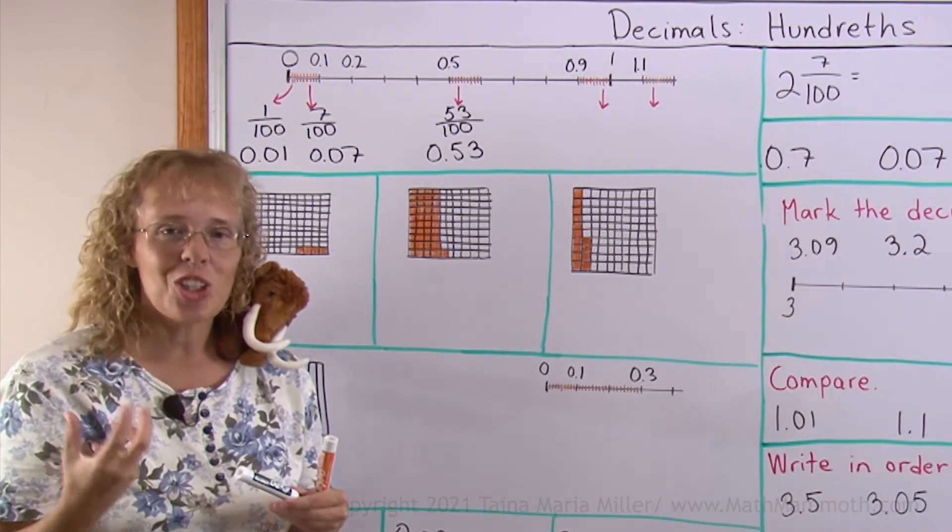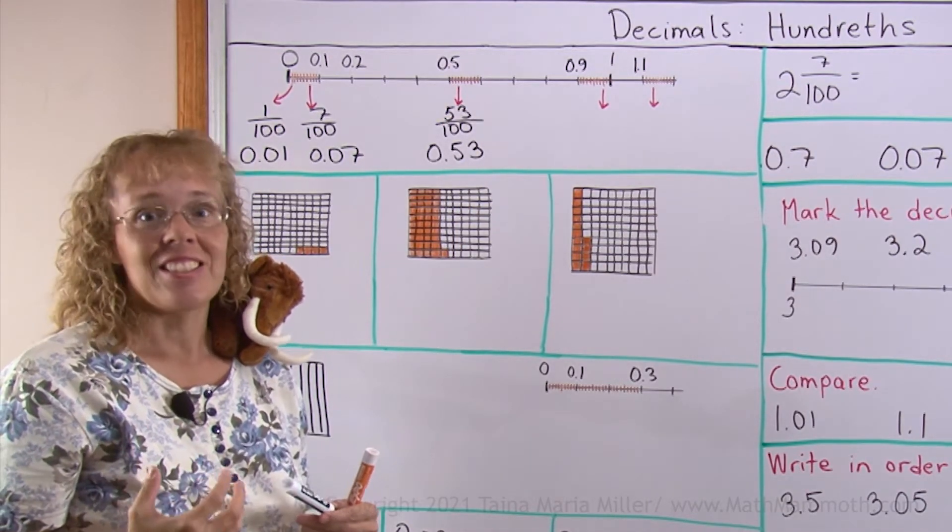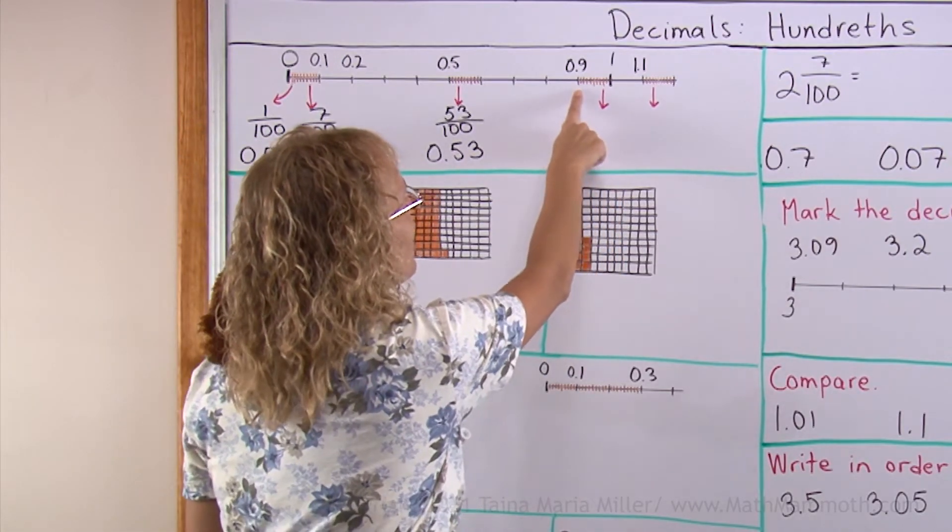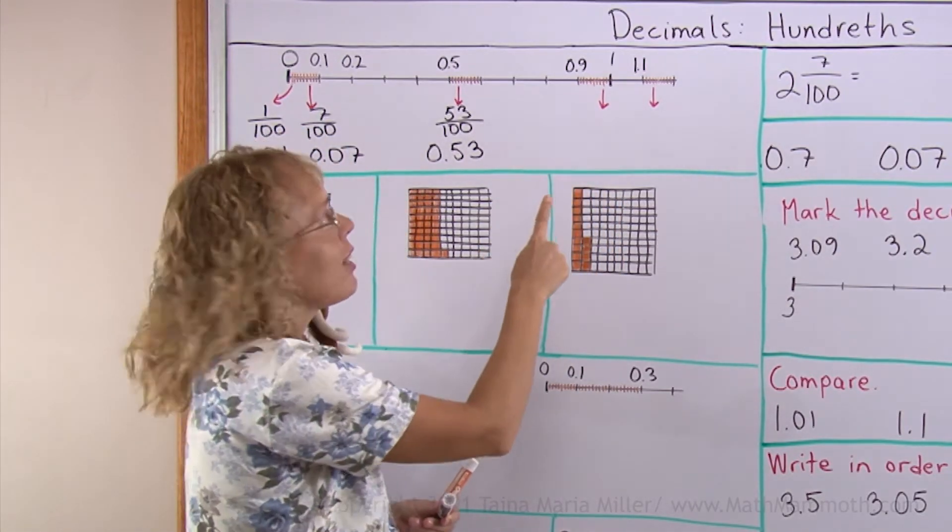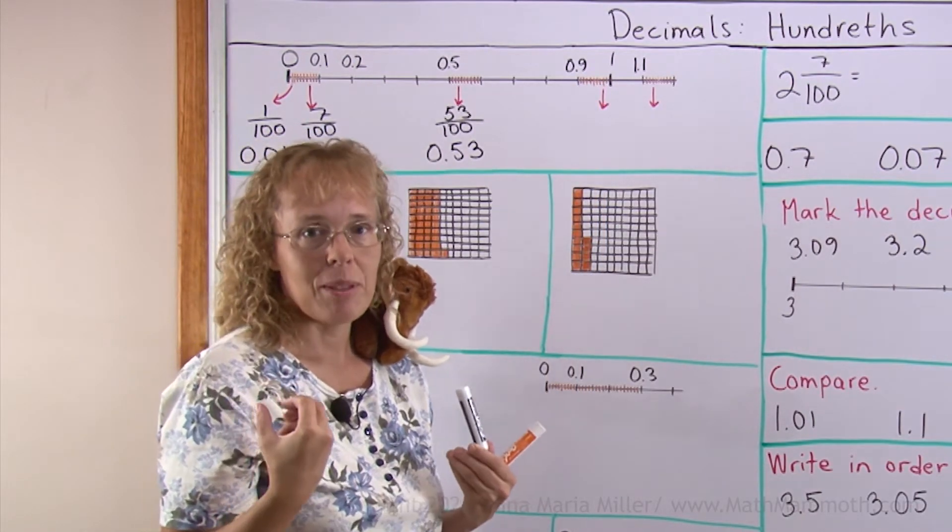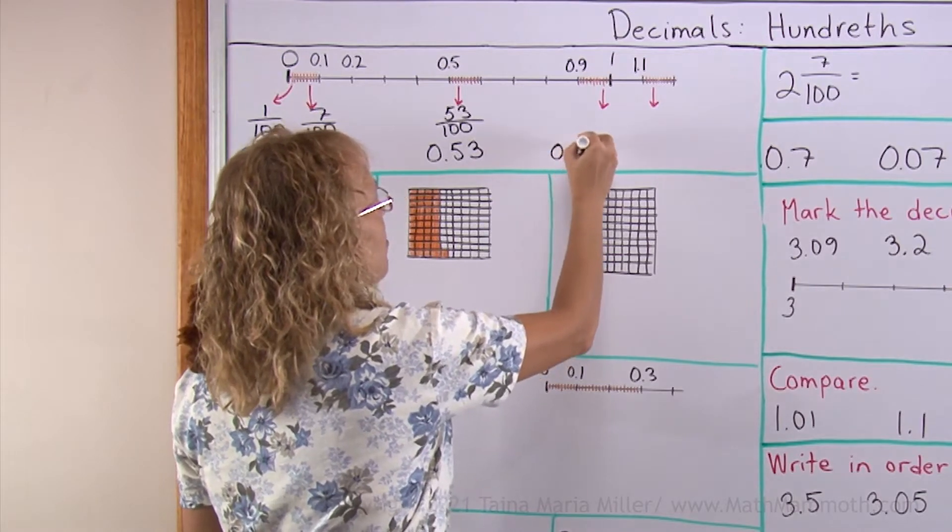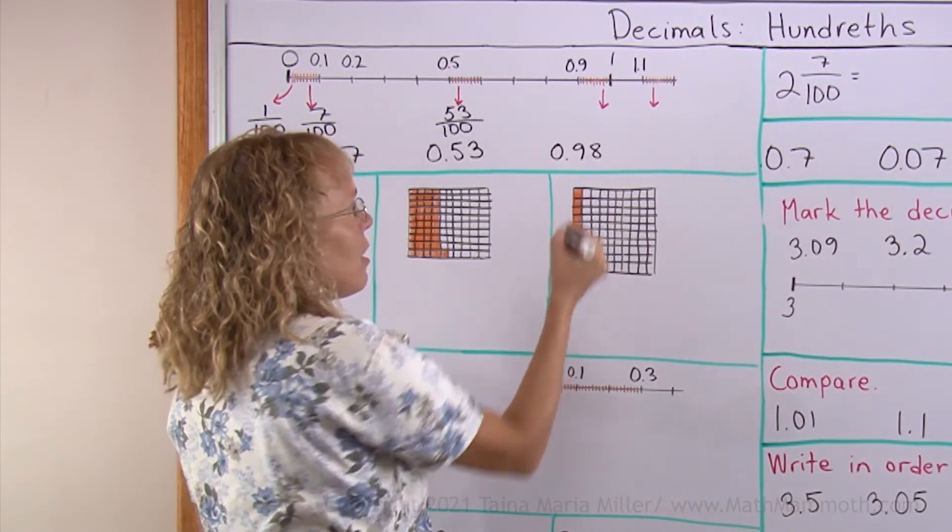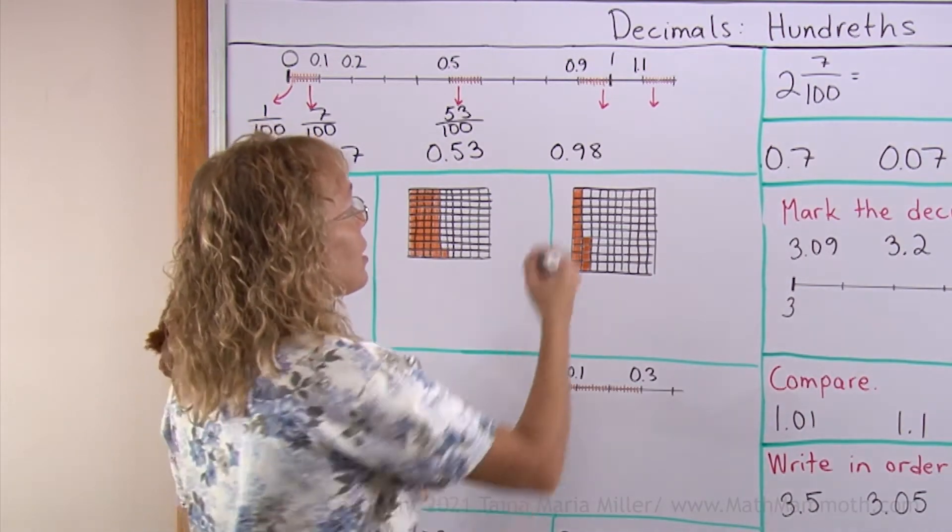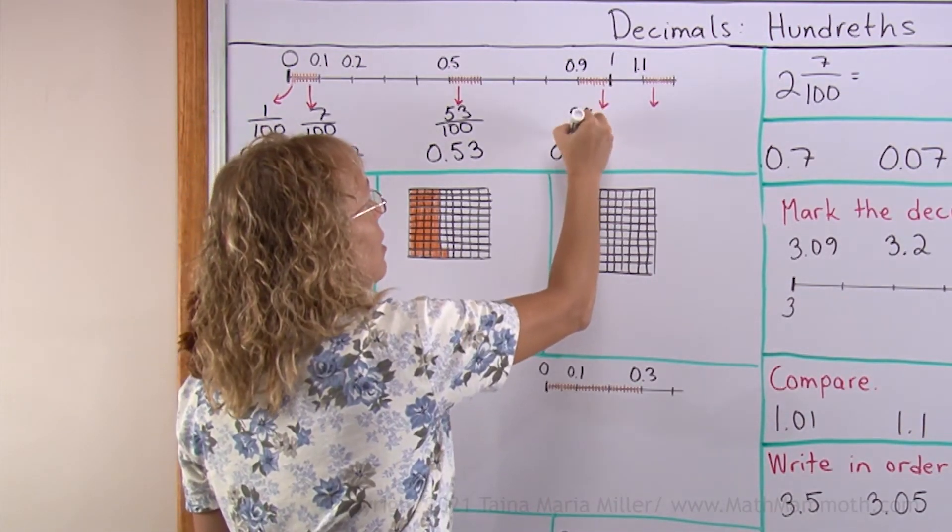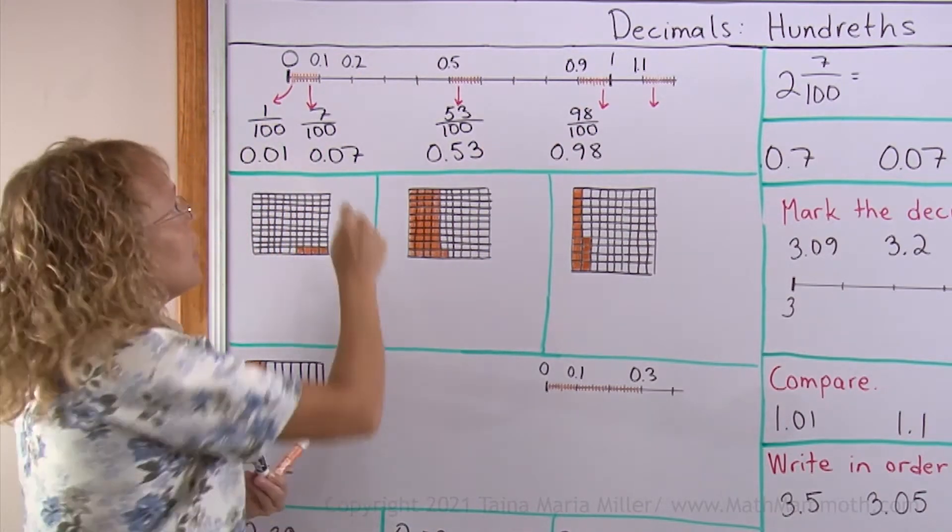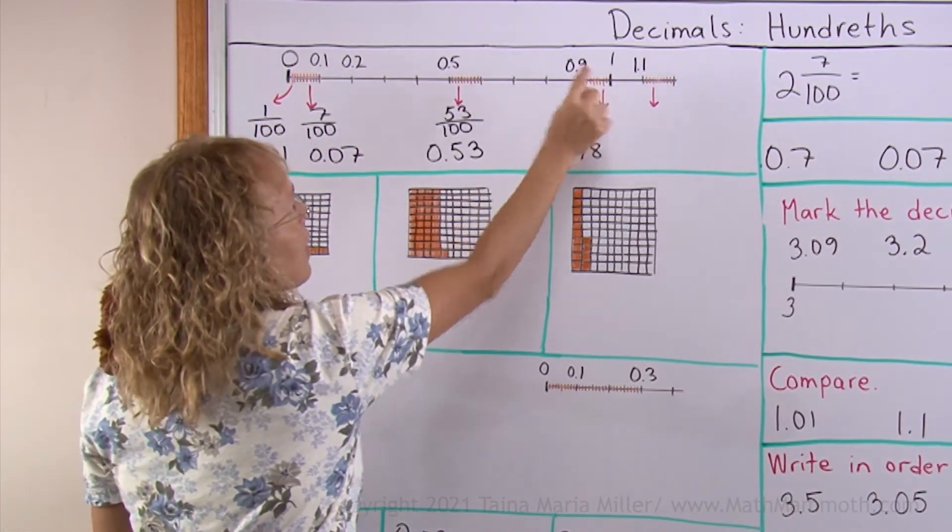While at the same time it is also 5 tenths and 3 hundredths. Now here, I am here at 0.9 or 9 tenths and then I go 8 little lines further, 8 little increments, 8 hundredths further. So I would be at 9 tenths and 8 hundredths. But we read that as 98 hundredths because it is 98 hundredths. If this whole thing was divided into hundredths and you would count them all up to this line, you would have 98.